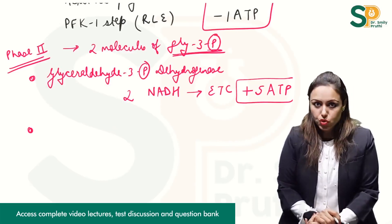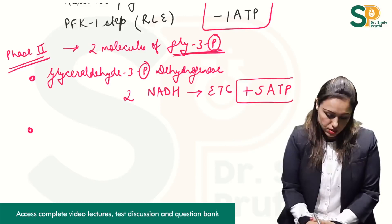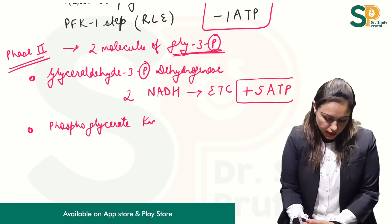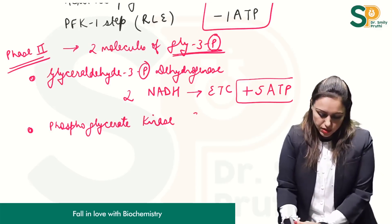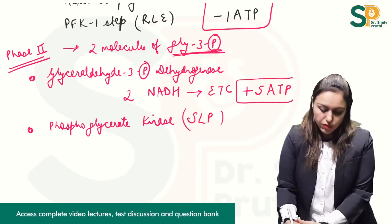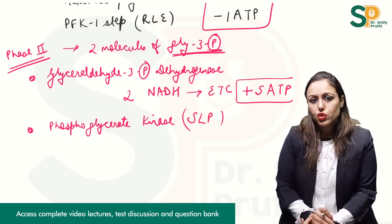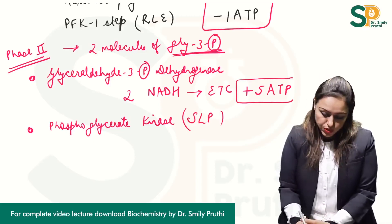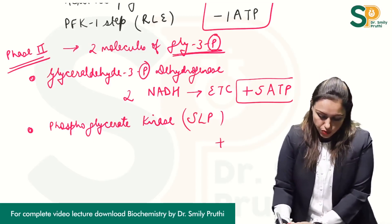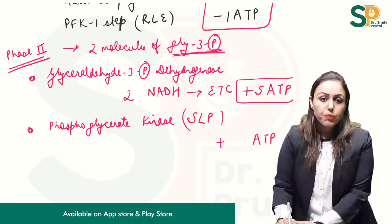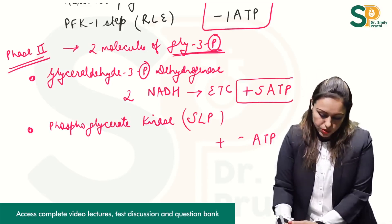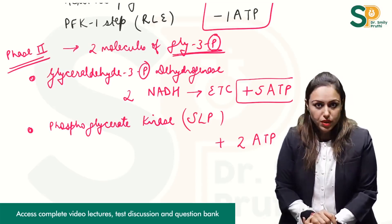Another step of phase 2 where we are getting energy is the phosphoglycerate kinase step, and this is a substrate level phosphorylation (SLP) step which is producing ATP. But as I told you, in phase 2 everything is multiplied by 2, so I will write plus 2 ATP here.